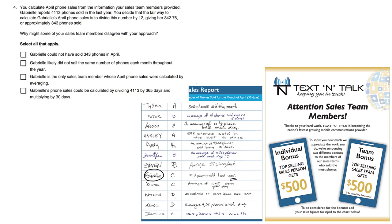For the month of April, why might some of your sales team members disagree with your approach? Select all that apply — there may be more than one correct answer. Choice A: Gabrielle could not have sold 343 phones in April. We're not sure exactly how many phones she sold in April since she only gave us information about the whole year, but it is possible, so we can't say it's impossible. Choice A does not apply.